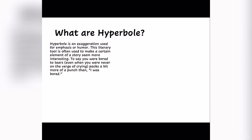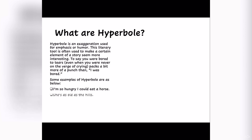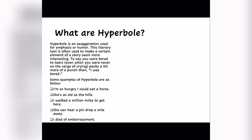Next up is hyperbole. What is hyperbole? Hyperbole is an exaggeration used for emphasis or humour. This literary tool is often used to make a certain element of a story seem more interesting. To say you were 'bored to tears' even when you were never on the verge of crying packs more of a punch than simply 'I was bored.' Some examples: I'm so hungry I could eat a horse. She's as old as the hills. I walked a million miles to get here. She can hear a pin drop a mile away. I died of embarrassment.